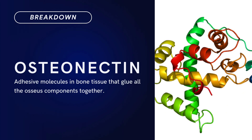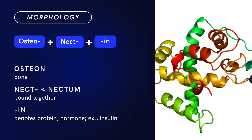Compound Term: Osteonectin. Brief Definition: Adhesive molecules in bone tissue that glue all the osseous components together. Term Morphology — a compound of osteo plus nect plus in. Osteon means bone; nect is derived from nectum, past participle of nectare, meaning to bind together; and the suffix -in denotes a protein or hormone, just like in insulin. There you have it: osteonectin.